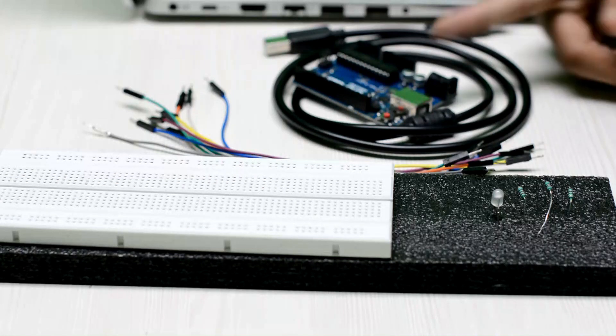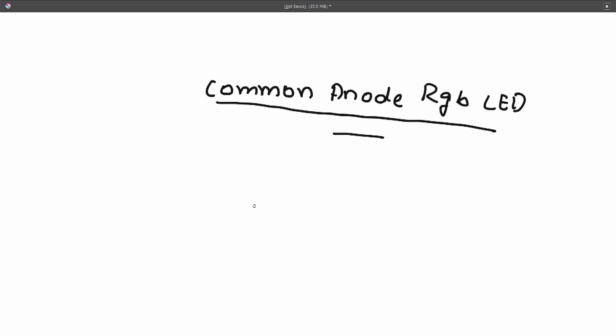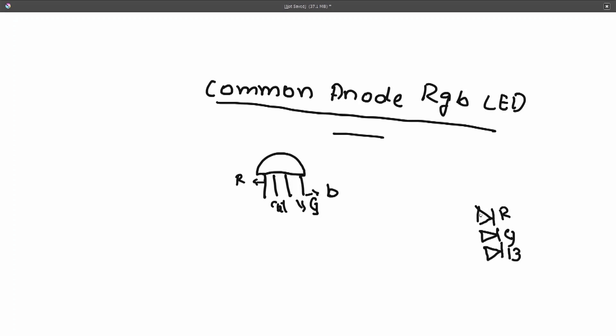Now we will see the schematic diagram of how to connect them into the circuit. This is the schematic diagram of a common anode RGB LED. These are the four legs of the RGB LED. This one represents R which means red. Just beside the red there is a common anode terminal. This one is the green and this one is the blue. All these anodes form the common anode terminal, which comes out like this.